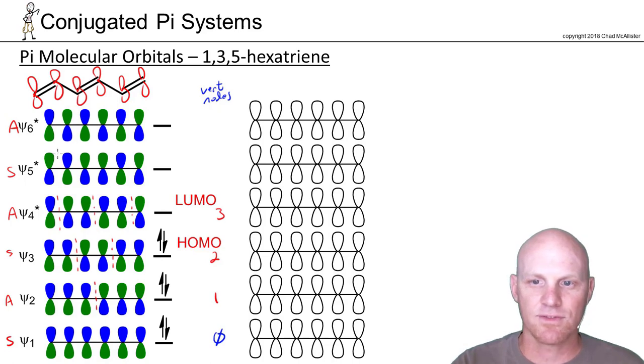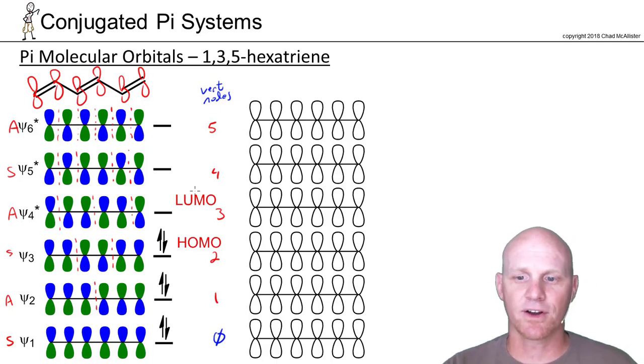In psi 5, we've got four vertical nodes. And in psi 6, they alternate all the way across, so you'll end up with five vertical nodes. So exactly everything we've predicted here.